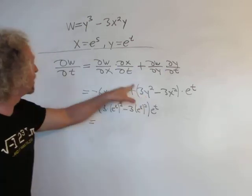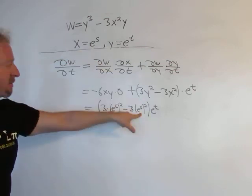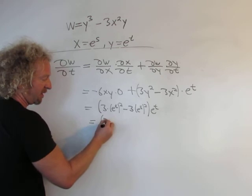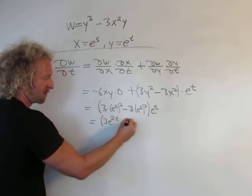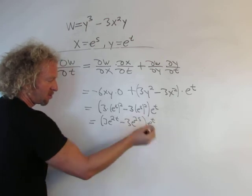Let's clean it up. So again, y was e to the t. x was e to the s. We squared both. And then we have e to the t. Let's distribute. We'll clean it up first. It'd be 3 e to the 2t minus 3 e to the 2s. And times e to the t.